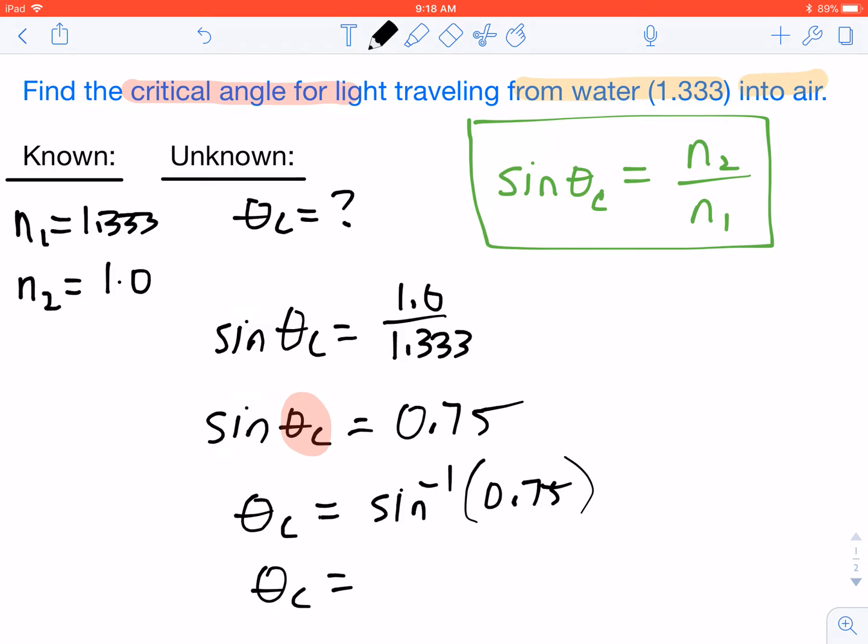As long as your calculator is in degrees mode, you're going to end up with the correct answer. In this case, our correct answer comes out to be 48.5 degrees. That is our critical angle.